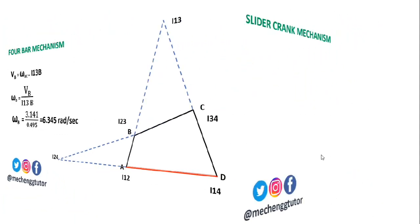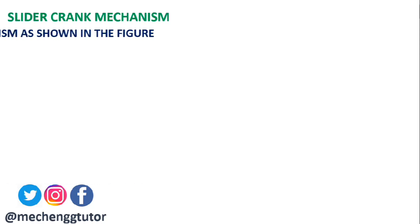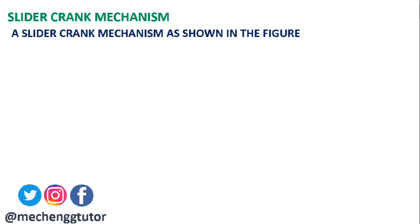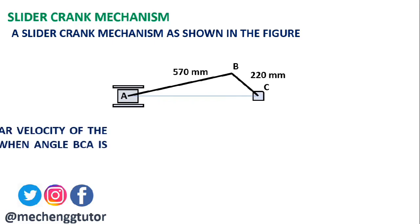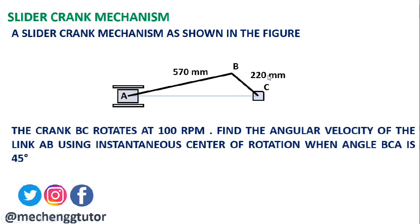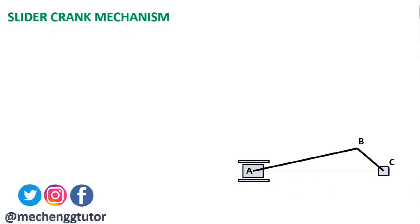Now we move to the second case: the slider-crank mechanism. The problem states: crank BC is 220 mm and connecting rod AB is 570 mm. The crank BC rotates at 100 rpm. Find the angular velocity of link AB — the connecting rod — using the instantaneous center of rotation when angle BCA is 45 degrees.